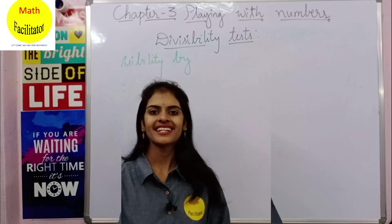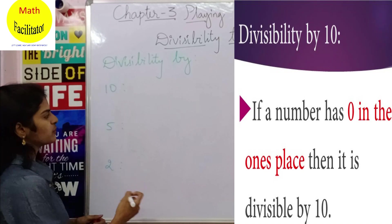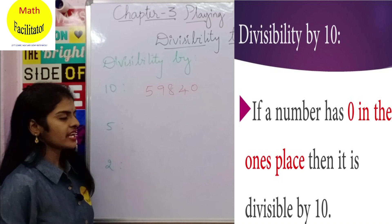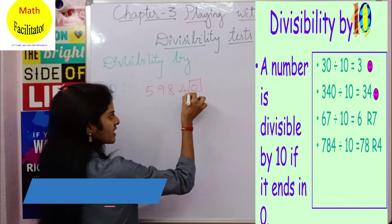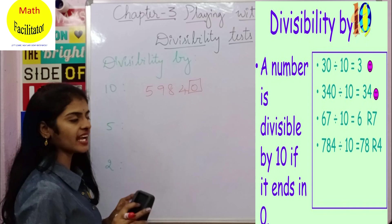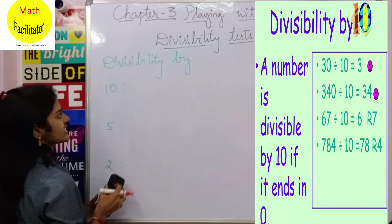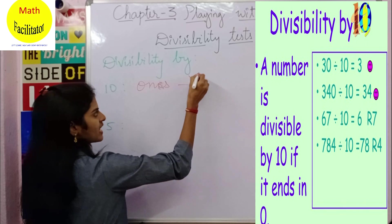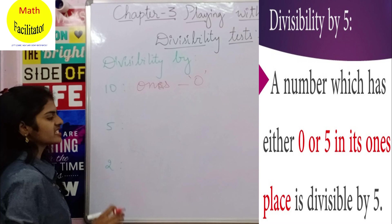Let us see how we can find whether a number is divisible by 10 or not. Suppose there is a number 59840. Is this number divisible by 10? You check the ones place — if in the ones place you find a 0, then that whole number is divisible by 10.